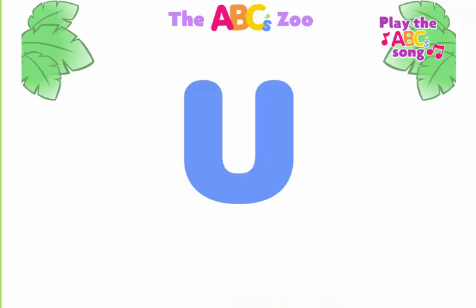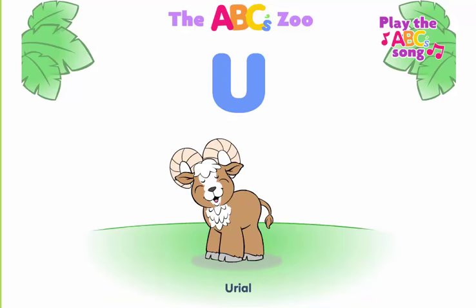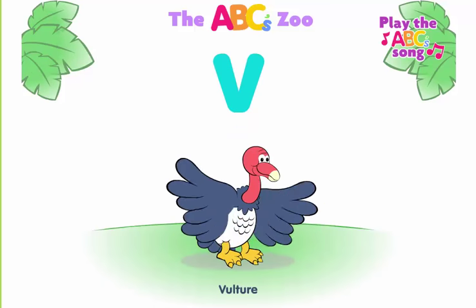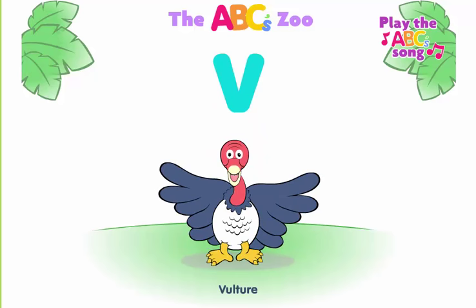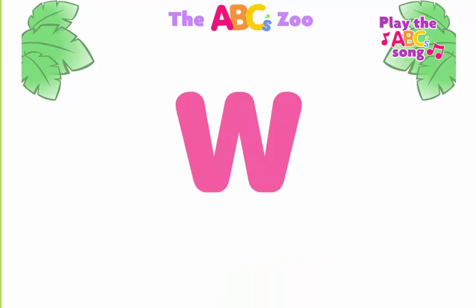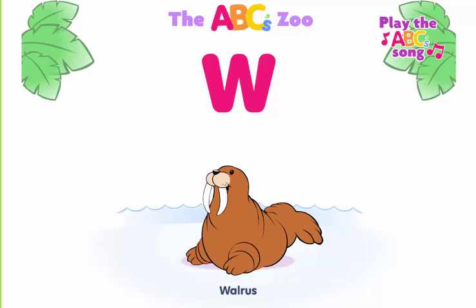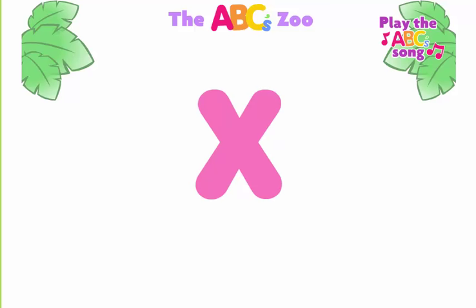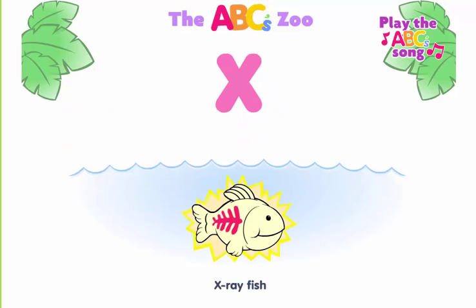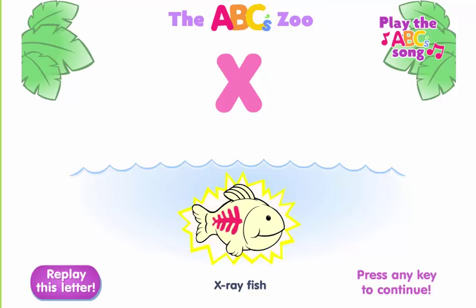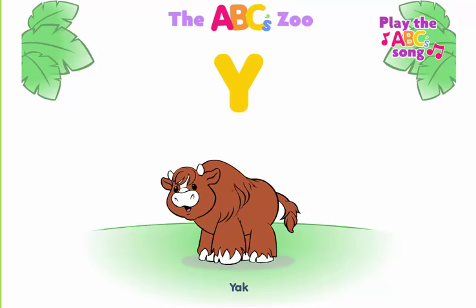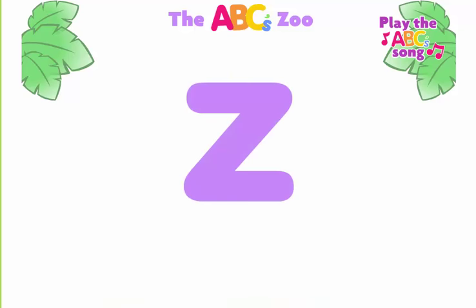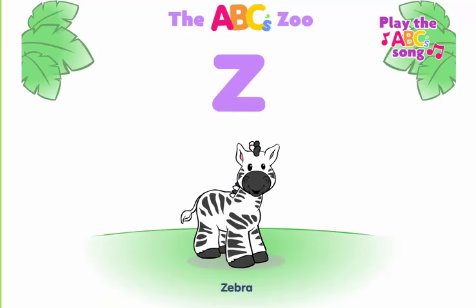U, oriole begins with U. V, vulture begins with V. W, walrus begins with W. X, x-ray fish begins with X. Y, yak begins with Y. Z, zebra begins with Z.